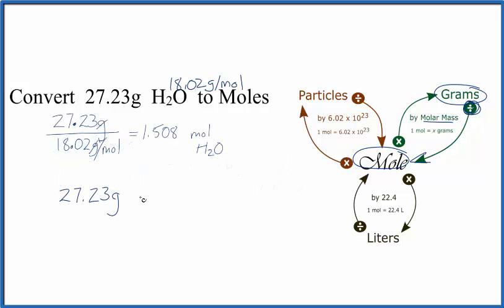So we start out with our grams of water, we're going to multiply by a conversion factor. We know we have grams here, we have to have grams on the bottom so they'll cancel out. That means moles are on top. We know that one mole of water is 18.02 grams. So we have grams on the top and bottom, that cancels out. We'll be left with moles. And again, 27.23 divided by 18.02 gives us the same answer we got earlier, and that is moles of H2O.